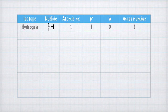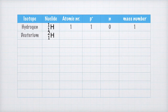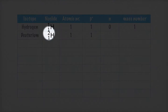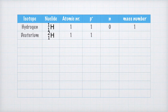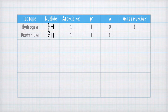The next isotope in our table is deuterium — this flavor of hydrogen. As you can see, it still has the atomic number 1, and thus only 1 proton in its nucleus. But since the mass number is 2, the nucleus also contains a neutron. And 1 plus 1 equals 2, and that's why the mass number for deuterium is 2.